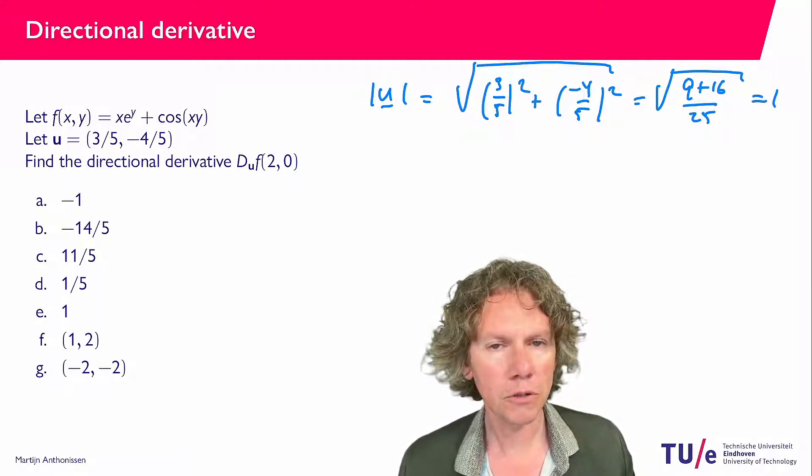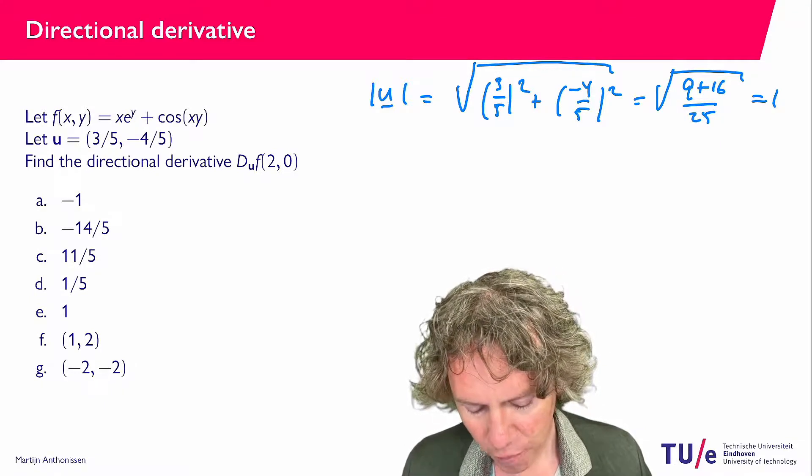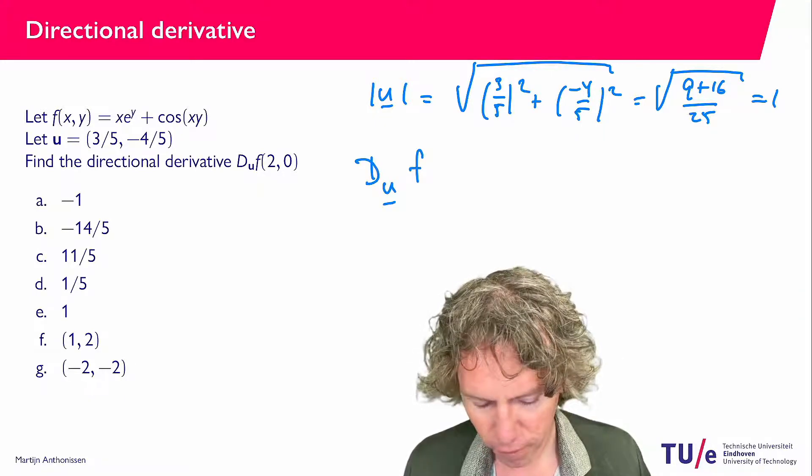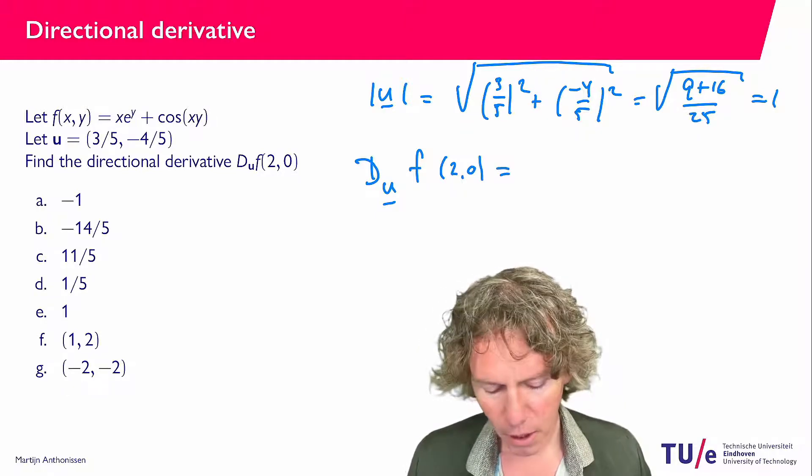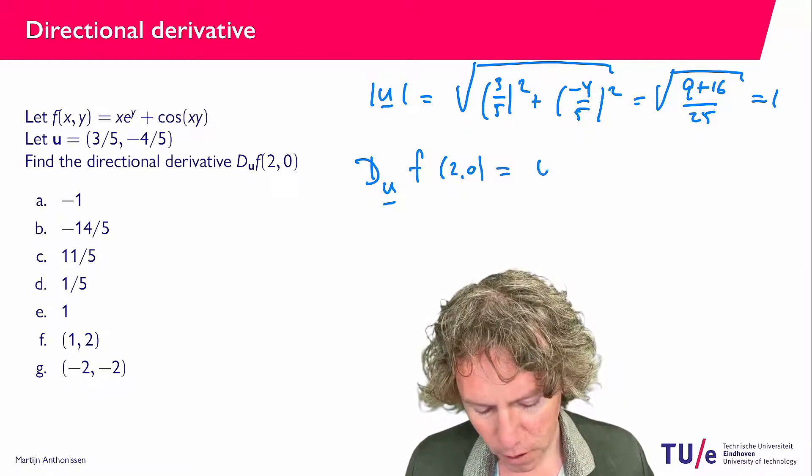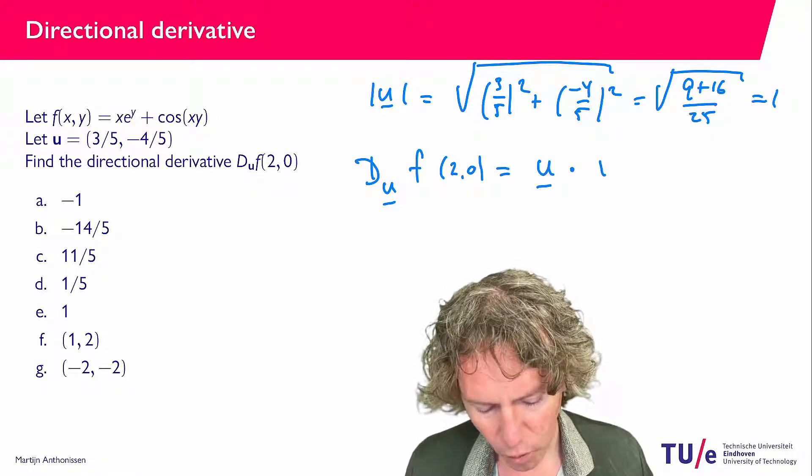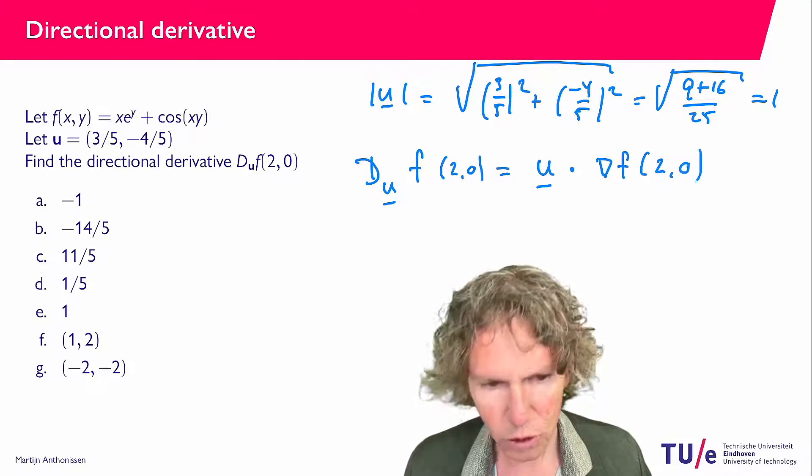I hope that it wasn't too difficult and that you managed to solve it. The definition of the directional derivative D_u f at (2,0) is that you should find the dot product of the vector u with the gradient of f at the point (2,0).